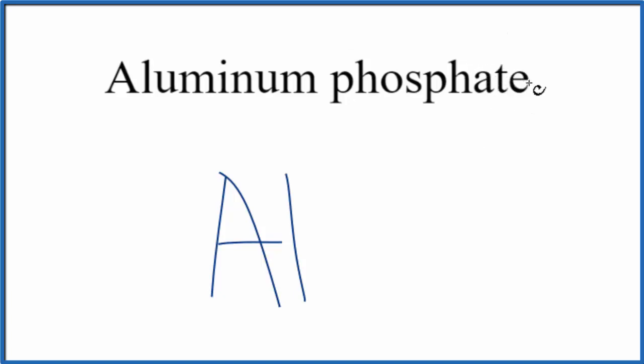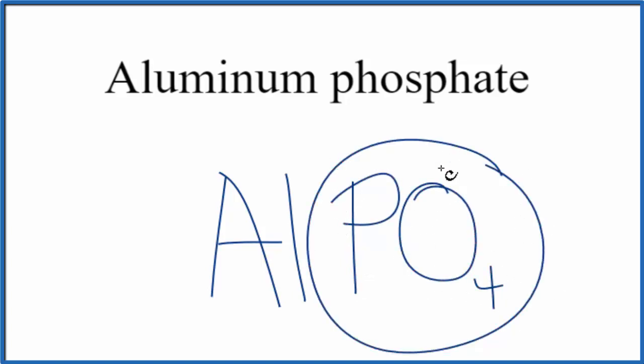You can either look it up on a list of polyatomic ions, or just remember that phosphate, the phosphate ion is P-O-4. And the whole phosphate ion here has an ionic charge of 3 minus. This is a good one to remember.